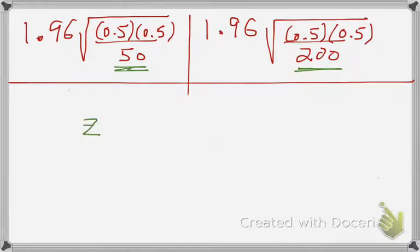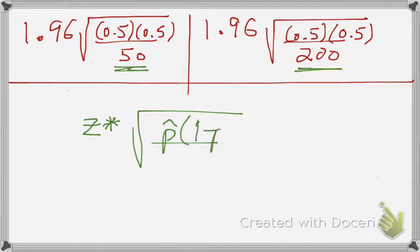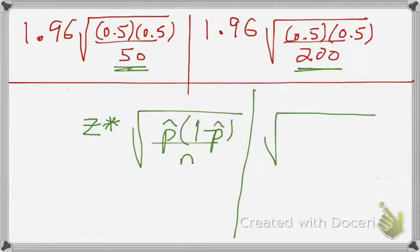So, you have this formula, z star, p hat 1 minus p hat, over n. And basically we're comparing that with the same formula, but now it's not 50 as n, but 200. 200 is 4 times 50.